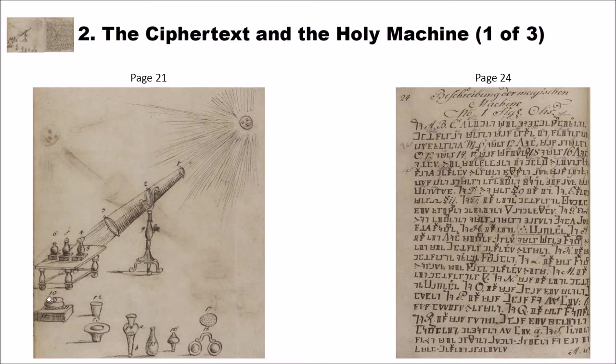And you have some other alchemy things. I don't know what this is. Glass things. Here you have glasses. And these are also shown on page 21. But for us, the interesting part is page 24. And here you see Beschreibung der magischen Maschine. That means description of the magic machine. And here we have this nice ciphertext written in some kind of Masonic or Pigpen-like cipher.